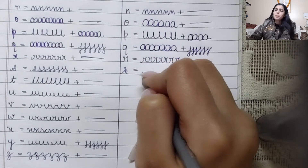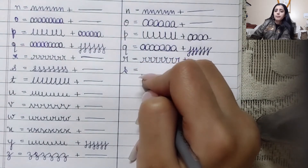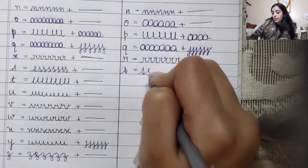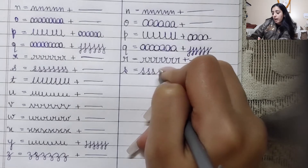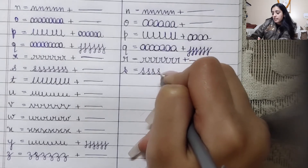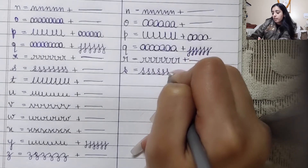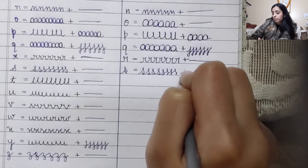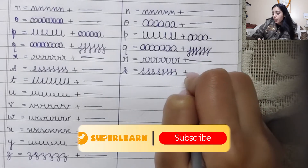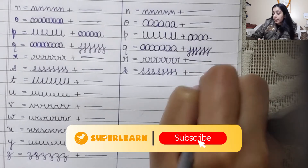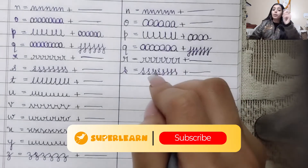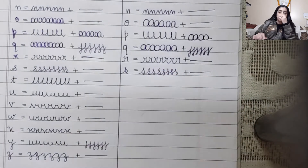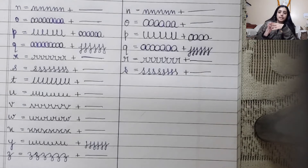How is S made? It's very simple. We'll write S also in a spiral, and make sure it goes in a straight line. Moreover, one more thing — when you practice in your initial days, keep the pace or speed of your practice a little low.